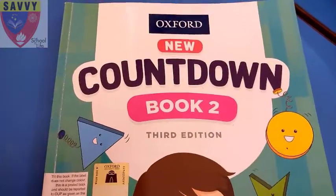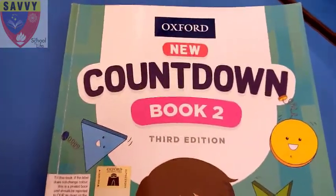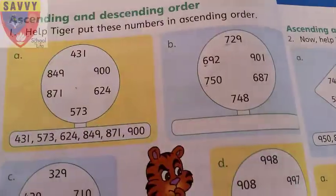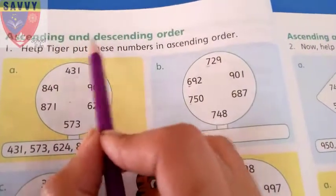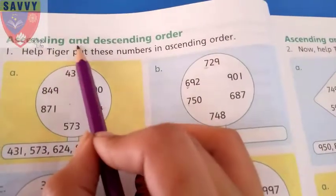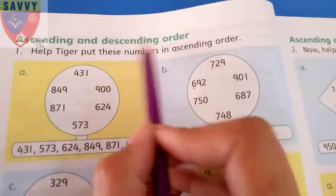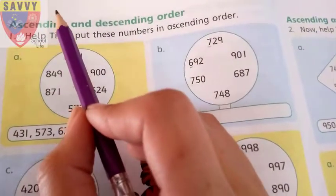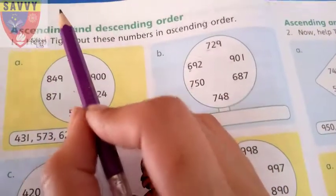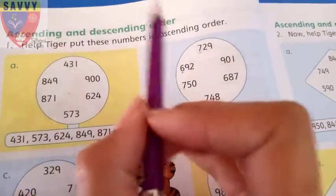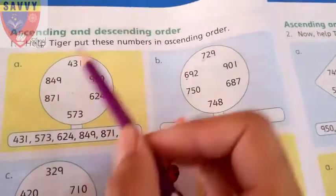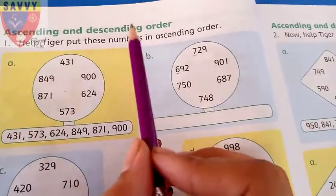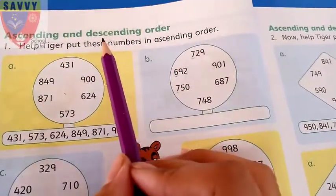Assalamualaikum. Let's open your maths book, open page number 20. Today we will learn about ascending and descending order. Ascending order means from smallest to biggest — chote se bade ki taraf.